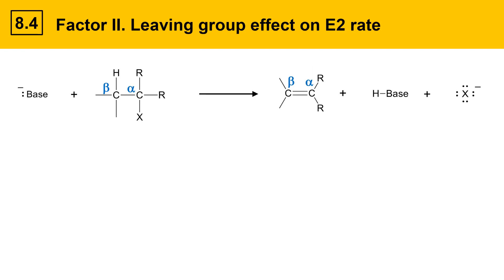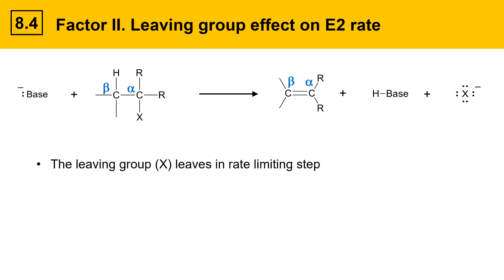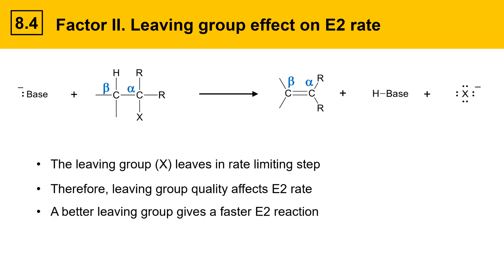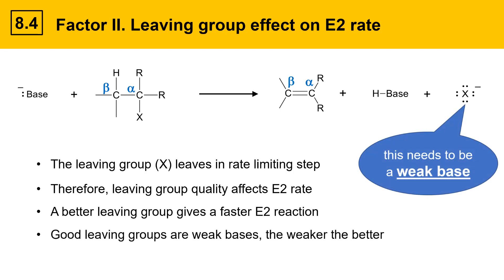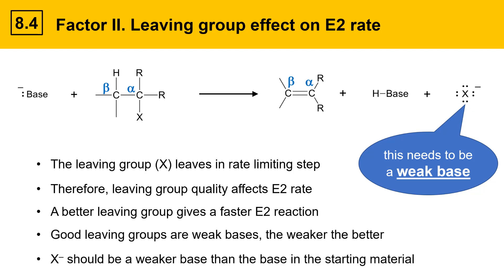The next factor is leaving group quality. The leaving group X plays an important role in the E2 mechanism because it leaves in the rate-determining step, so it affects the E2 rate. A better leaving group gives a faster E2 reaction, and good leaving groups are weak bases — the weaker the better. For alkyl halides that would be chloride, bromide, or iodide. X should be a weaker base than the base in the starting material in order to favor products.